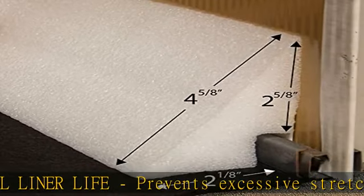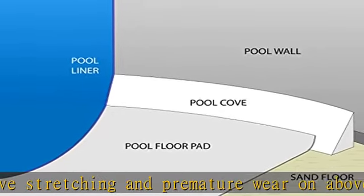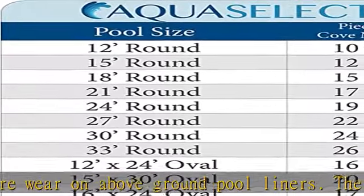The underlayment helps eliminate sand from washing away and keeps your vinyl pool liner in place. Foam Pool Cove is made up of durable foam and its designed construction provides floor protection.